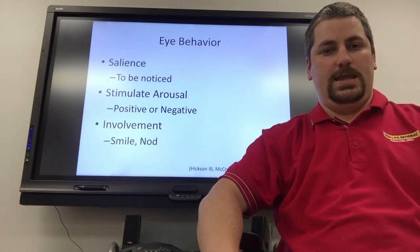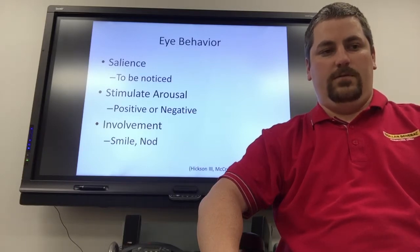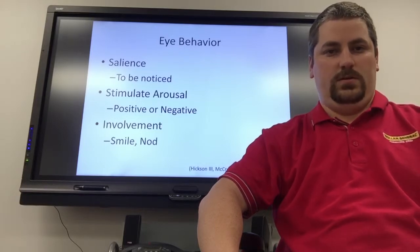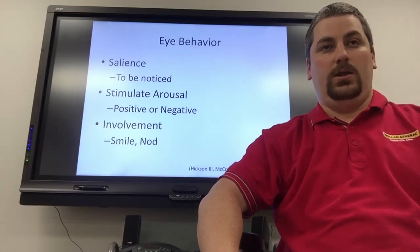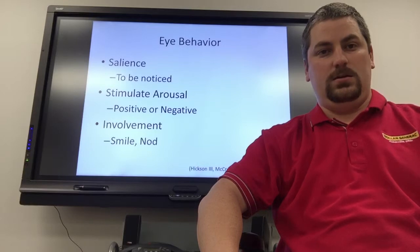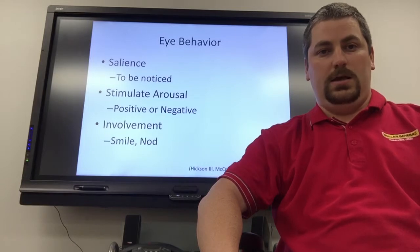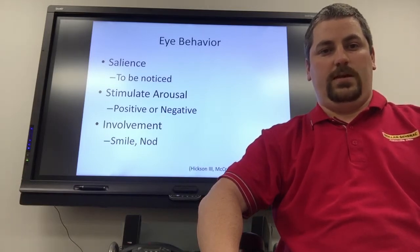Eye behavior has three main things. The first thing eye behavior does is it gives you salience. Salience is letting a person know that you want to be noticed. By looking at a person, you may show that you're interested in being seen and they may notice you. If you don't look at the person, you won't get that eye contact and they may not notice you. That's where the salience comes from.